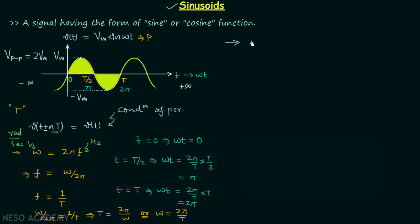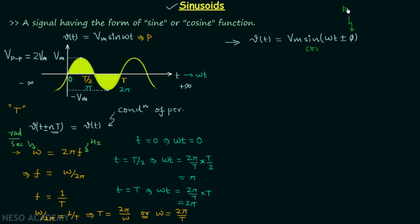In the next point we will talk about the more general expression of a sinusoid. V(t) = Vm·sine(ωt ± φ) is a more general expression of a sinusoid; in place of sine you can have cosine as well. Here ωt is the argument in the basic form, and ωt ± φ is the argument in the general form. φ is known as the phase shift and it may be leading or lagging.